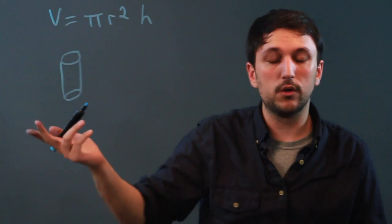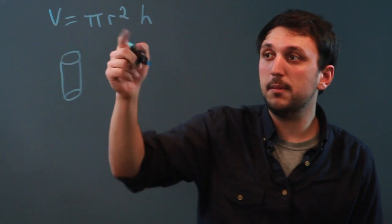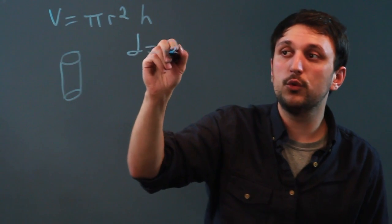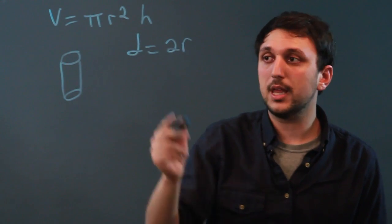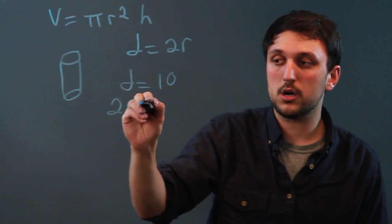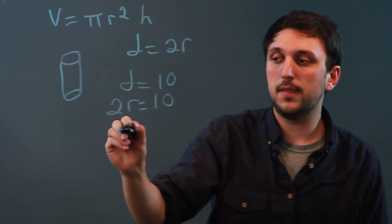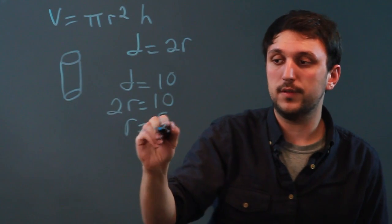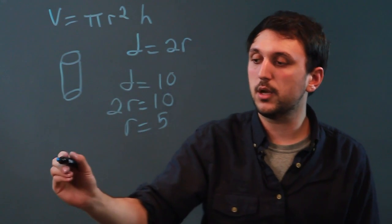So the problem is, where is the diameter? Well, the diameter is 2r. So let's say we have a diameter of 10. That means 2r equals 10, and that would mean that r equals 5. So we can plug it into the equation.